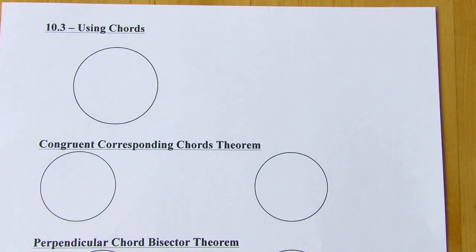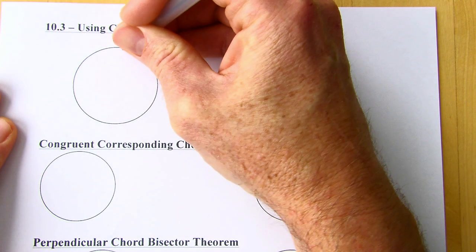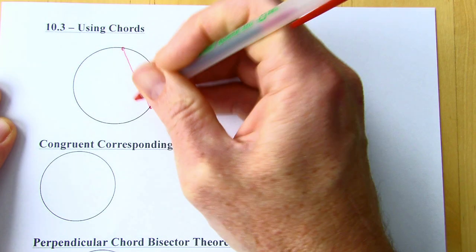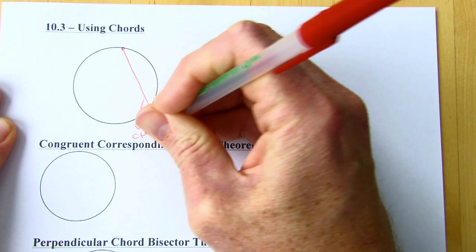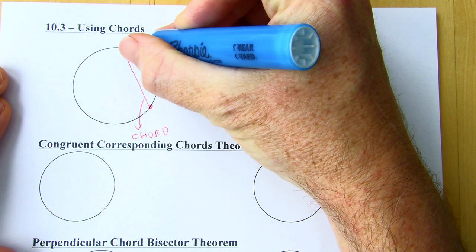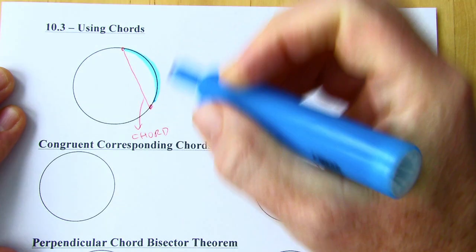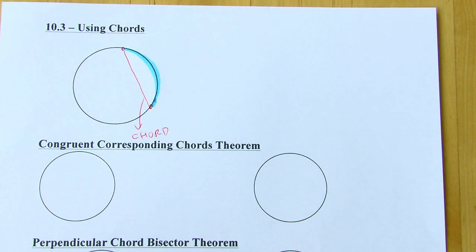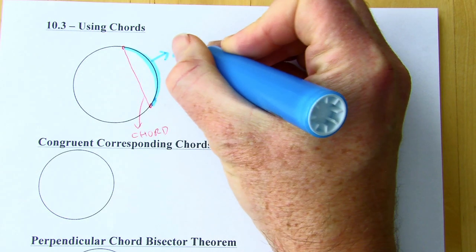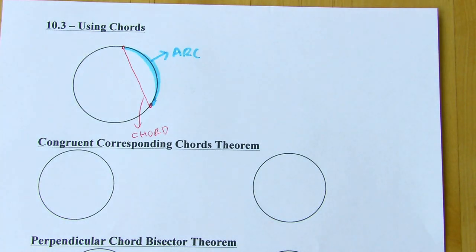Section 10.3 is called Using Chords. There's a link in the description to a note-taking guide if you want to download and print it. As we already discussed in previous sections, if you take any two points on a circle and connect them with a line segment, this is called a chord. If you take part of a circle connecting those same two points, this is called an arc. It's really important to remember the difference — they often get confused.